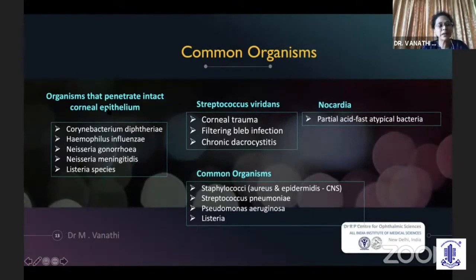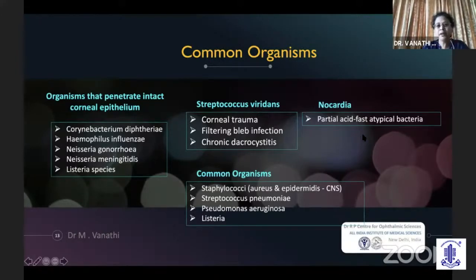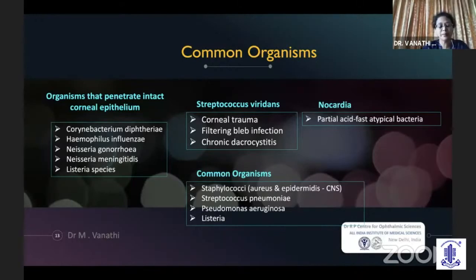A common question for postgraduates is: which organisms can penetrate the intact corneal epithelium? These are Corynebacterium diphtheriae, Haemophilus, Neisseria gonorrhoeae, Neisseria meningitidis, and Listeria species. Common bacteria causing keratitis are Staph, Strepto, and Pseudomonas; lesser common are Listeria and Moraxella. Streptococcus viridans infections are most common following corneal trauma, filtering bleb infections, and sac infections. Nocardia is a partial atypical acid-fast bacterium that may mimic a fungal ulcer and is typically suspected following injury with contaminated water or swimming pools.